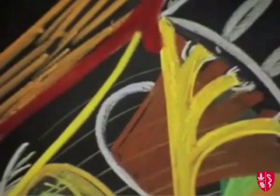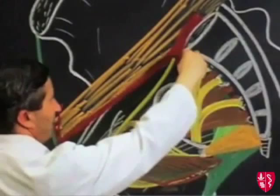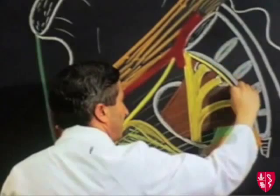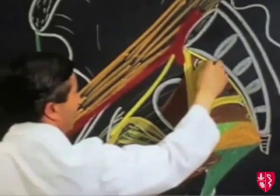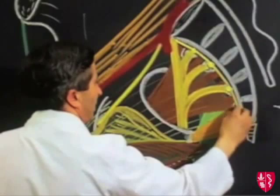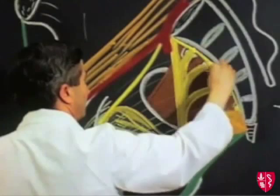Now we're in a position to put in the sympathetic trunk. The lumbar part of the sympathetic trunk passes down over the pelvic brim and then runs down in front of the lateral mass of the sacrum, very close and medial to the anterior sacral foramina. There we see four or five expansions along its course of the sympathetic ganglia.